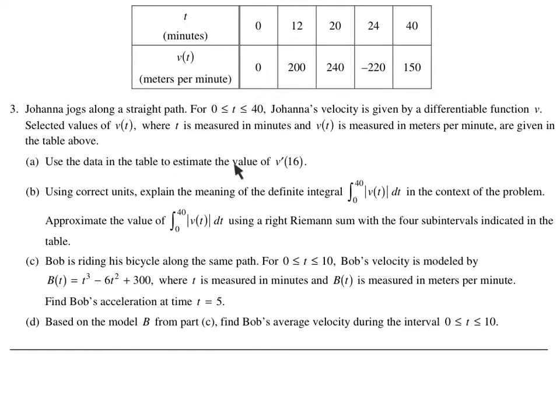So use the data table to estimate v prime 16. Alright, so v prime 16 means what's the slope at 16? You know another way of thinking that is what's the acceleration at 16? That's what it's really saying. What is her acceleration at 16? But okay, let's find the slope at 16. Well, 16 is between these two values and it's saying slope. Derivative means slope. So could I get the slope or estimate the slope between these two values? Well, yeah, 16 is exactly between these. So can I use these two values and do slope to estimate the derivative? So slope is just y2 minus y1. So it's going to be y2 minus y1 divided by x2 minus x1.